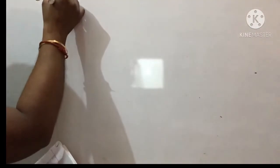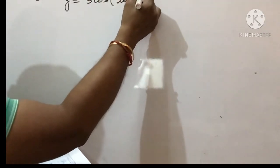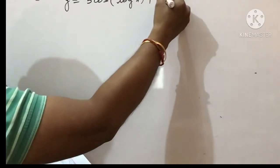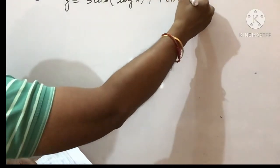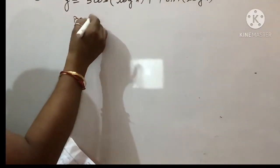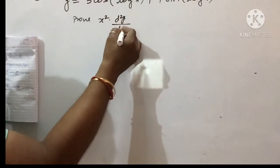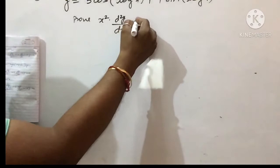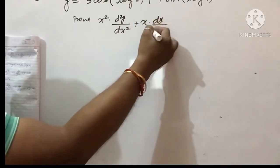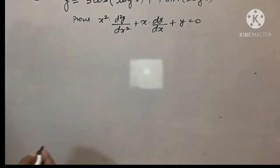Question number four ki agar hum baat karein — toh dekiye ye question aapka NCERT se hai: y = 3cos(log x) + 4sin(log x), aur aapko proof karna hai: x²·d²y/dx² + x·dy/dx + y = 0. Ye aaj ka question hai aapka.